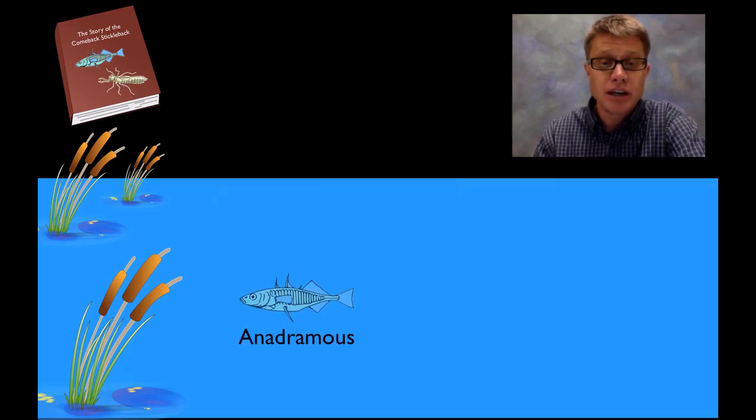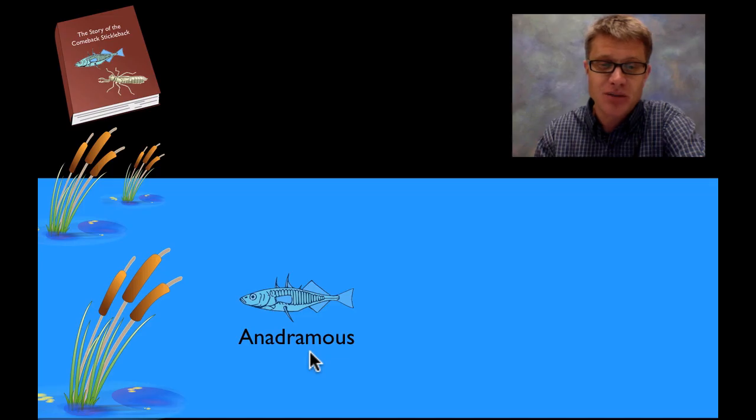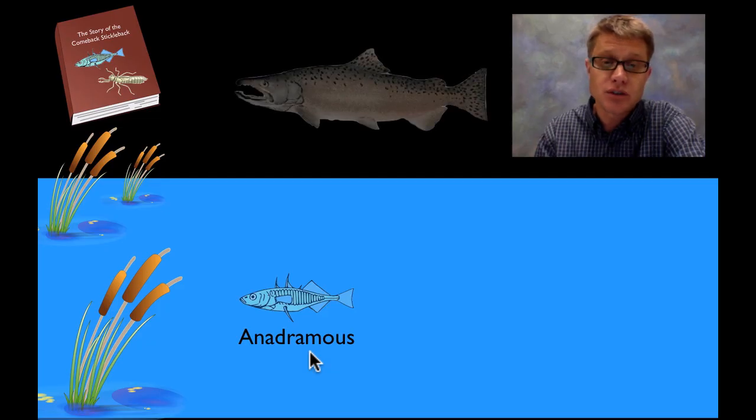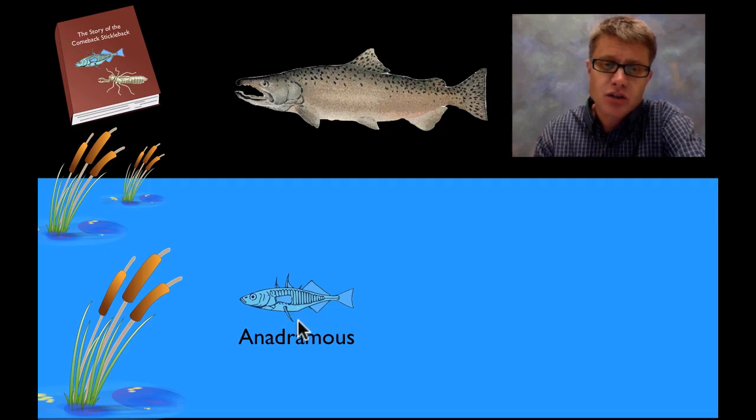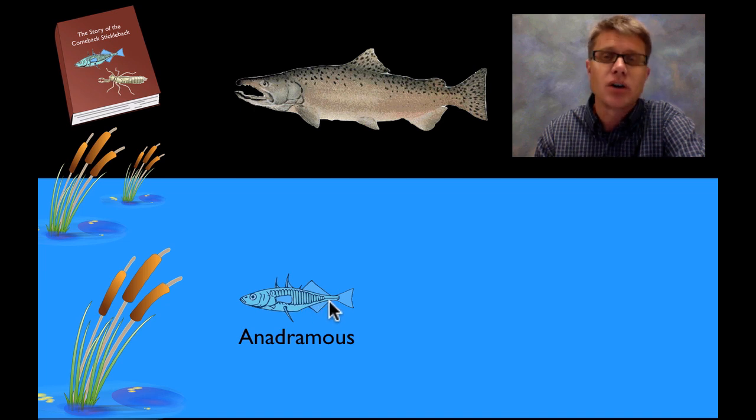But a few years later anadromous sticklebacks - and that's a huge word, I'm happy I said it right - it basically means they swam their way back from the ocean, made it into Loberg Lake, and they started reproducing. Now the difference between the two, hopefully you saw, is that these ones are going to have bigger spikes. These marine sticklebacks are ones that are found in the ocean. And they have all these armored plates on the side. In fact we call them fully armored stickleback.